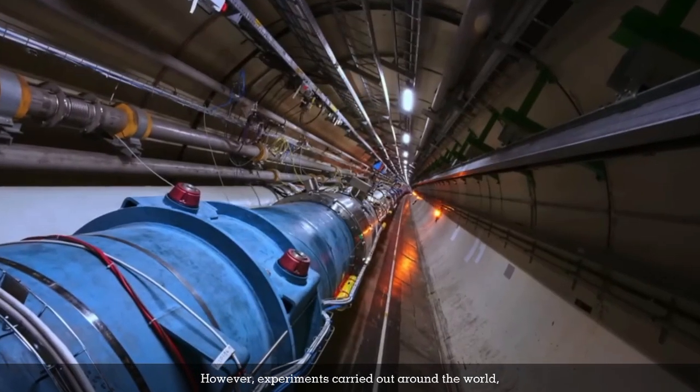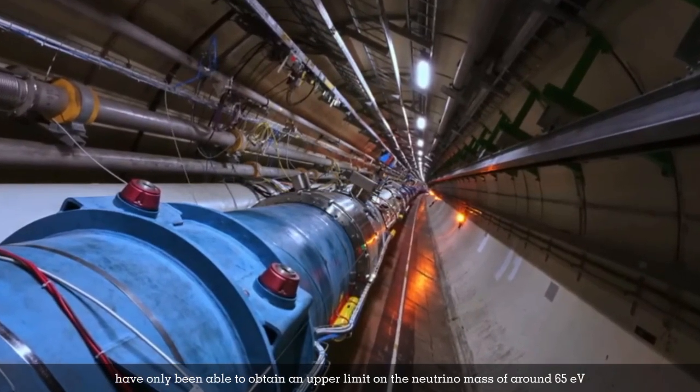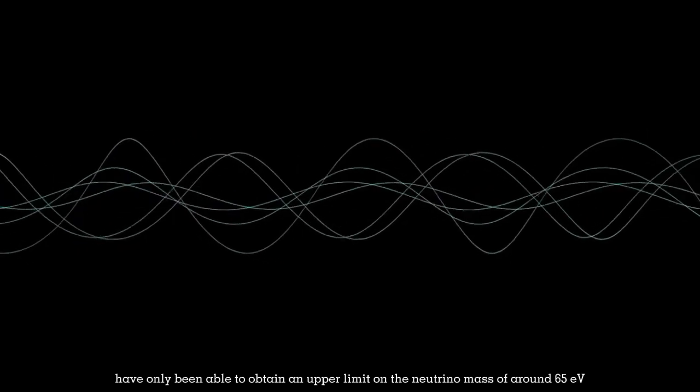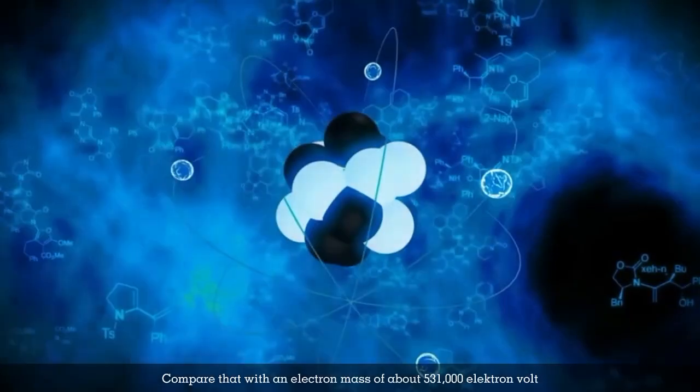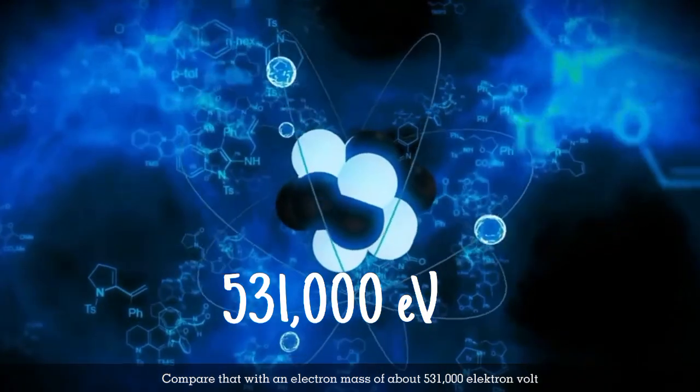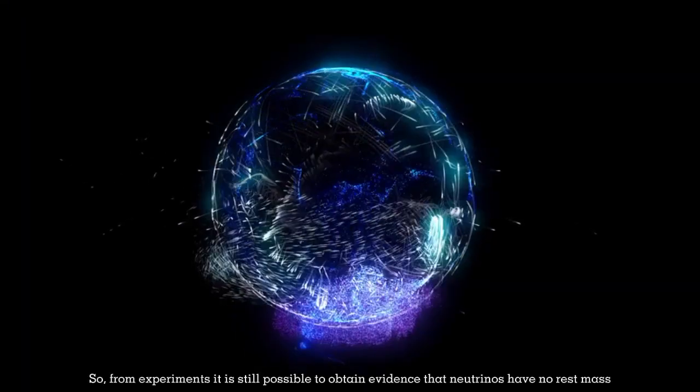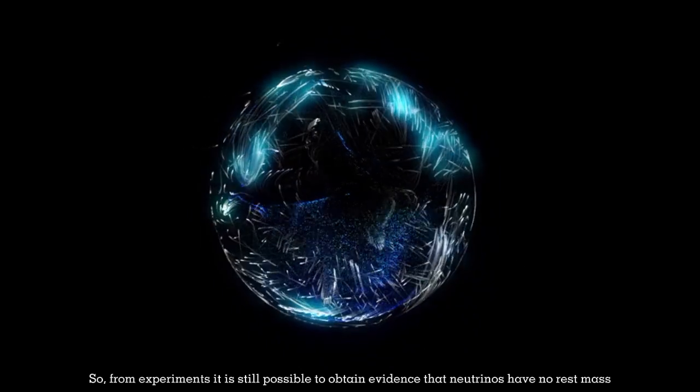However, experiments worldwide have only obtained an upper limit on neutrino mass of around 65 electron volts. Compare that with an electron mass of about 531,000 electron volts. From experiments, it's still possible to obtain evidence that neutrinos have no rest mass.